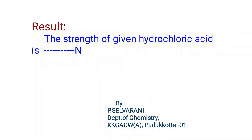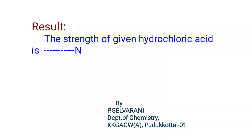At the end of this experiment, we determine the strength of hydrochloric acid present in the solution. In this video, we discussed what is meant by conductometric titration, its principles, and the procedure using the example of strong acid with strong base. I hope you liked this video. Please subscribe to the channel and click the bell icon to get notifications. Thank you.